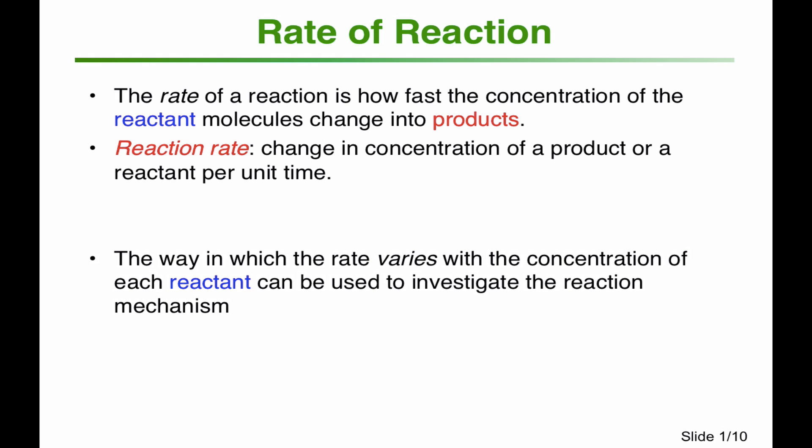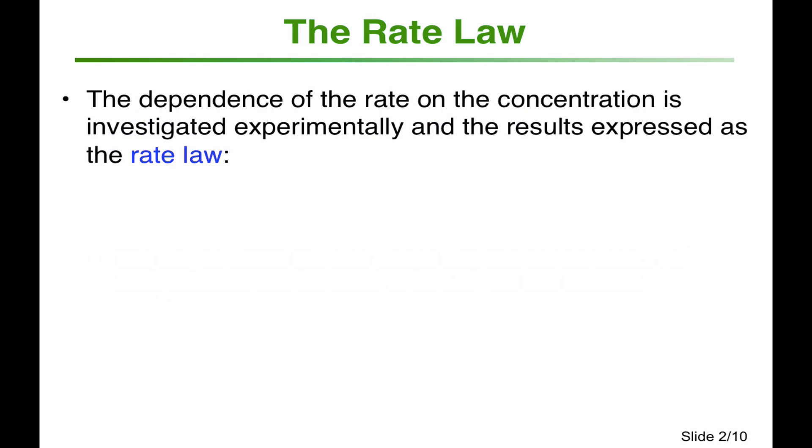In organic chemistry you've met lots of mechanisms. How do we know if a mechanism is right or wrong? We look at the way the rate varies with the concentration of each reactant, and this can be used to investigate a reaction mechanism and disprove it. The rate law is the dependence of the rate on the concentration, and it is investigated experimentally with the results expressed as a rate law.